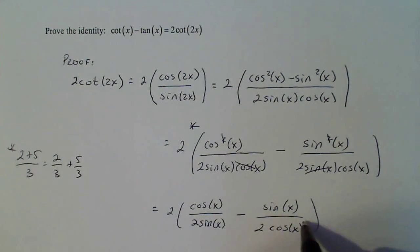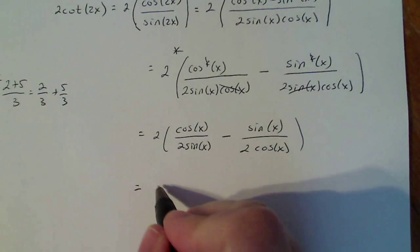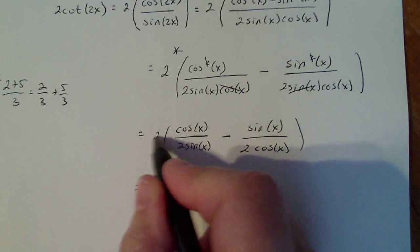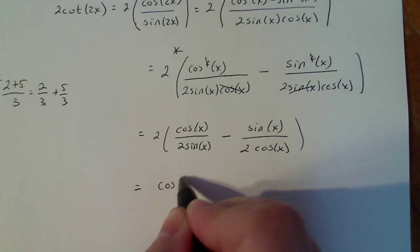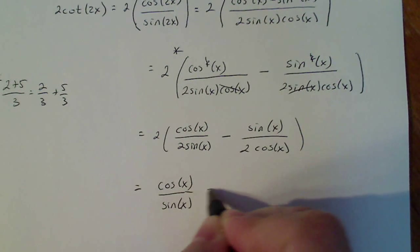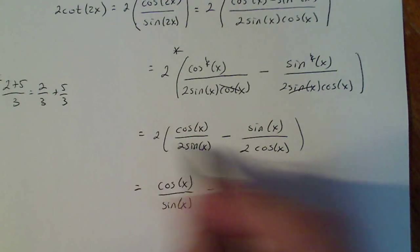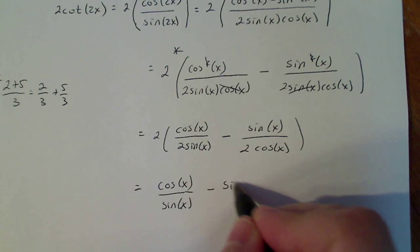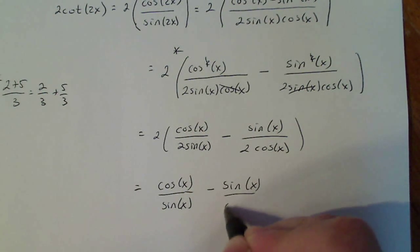If I distribute this 2 across, those two's cancel, so I'm left with cosine x over sine x. If I distribute the 2 here, those two's cancel and I'm left with sine x over cosine x.